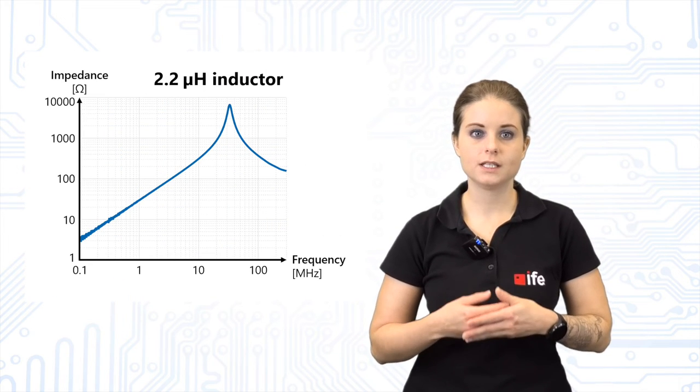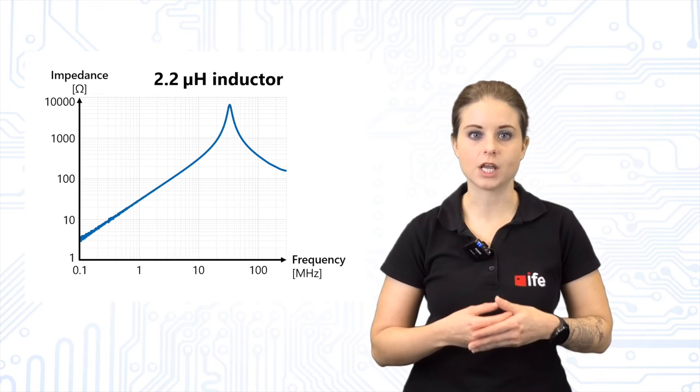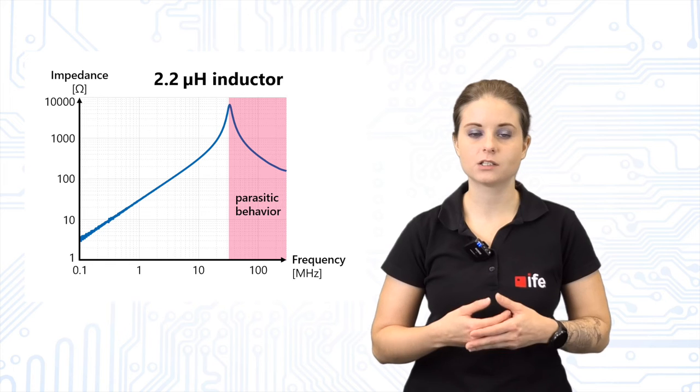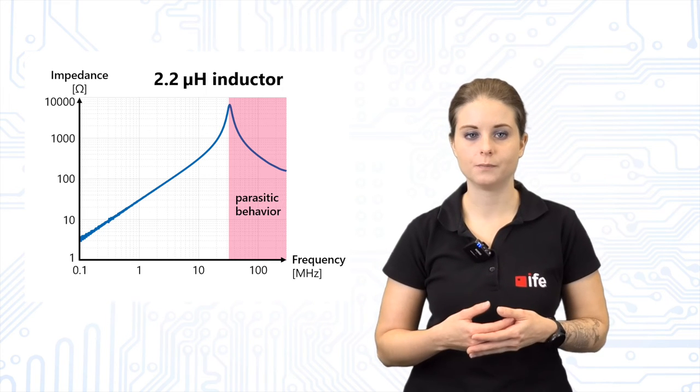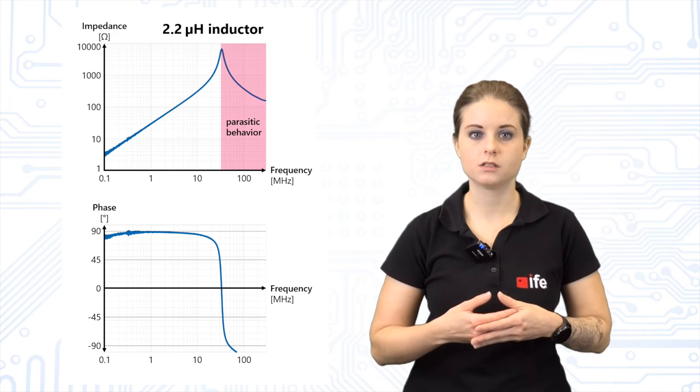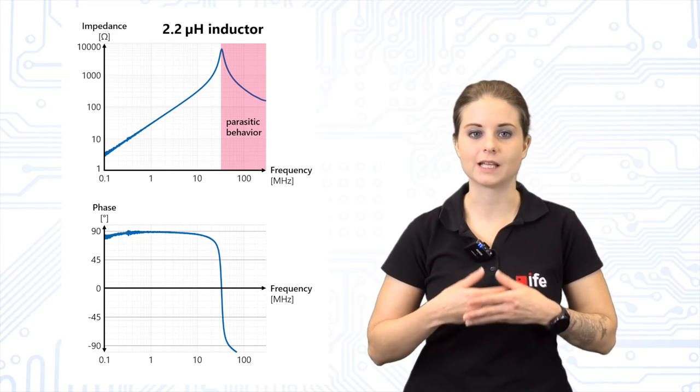As a result we can see that the inductor's impedance changes over frequency. In the higher frequency range the inductor starts to work as a capacitor. The phase shift of voltage and current at higher frequencies will therefore never be the ideal 90 degrees.